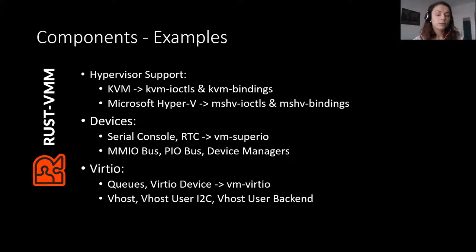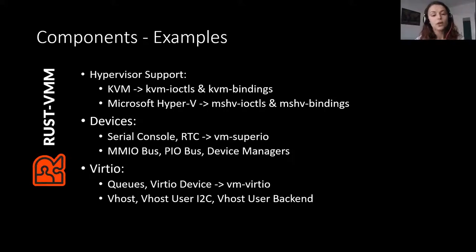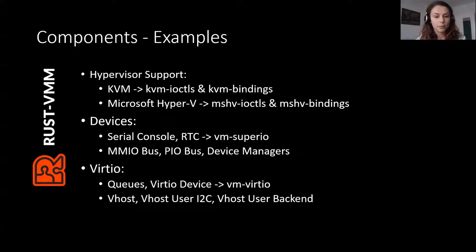Another important part of RustVMM is the implementation of VirtIO devices. Here we have primitives — the queues and the VirtIO devices — but also device implementations such as vhost user, vhost user i2c, and other primitives. These components are in various states: some are already published and some are still in implementation.